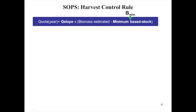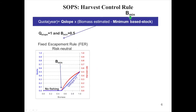In this study, the harvest control rule was flexible. The quota for a given year is determined by two unknown parameters: the minimum base stock Bmin and the Qslop. Both Bmin and Qslop can have any value between 0 and 1. For example, if Qslop is 1 and Bmin is 0.5, the harvest control rule is a fixed scaling rule — the blue line in the left plot. Below Bmin there is no fishing, and the slope Qslop indicates how fast the quota increases as biomass increases above Bmin.